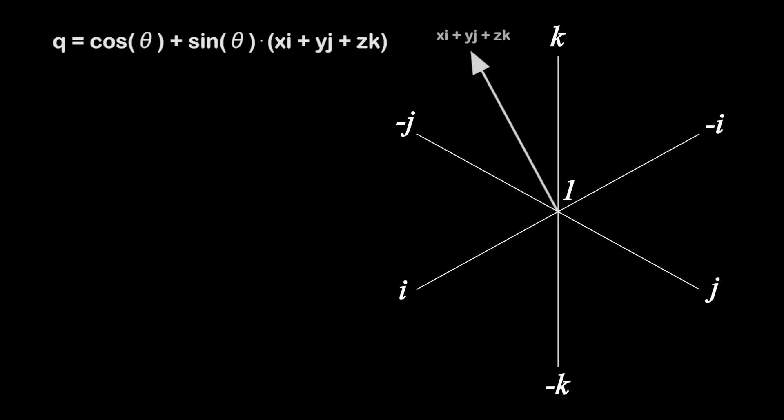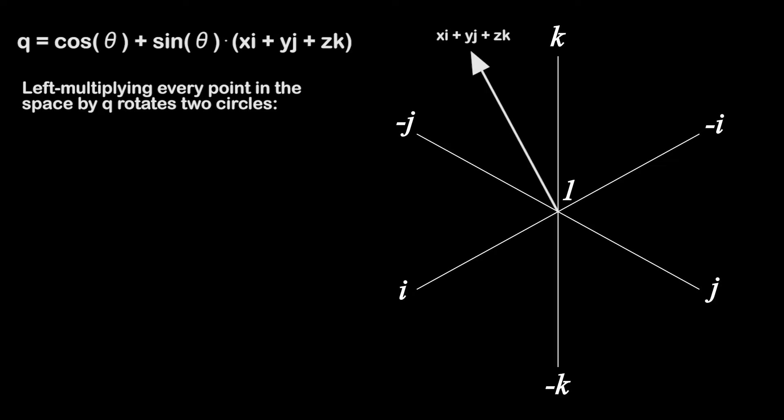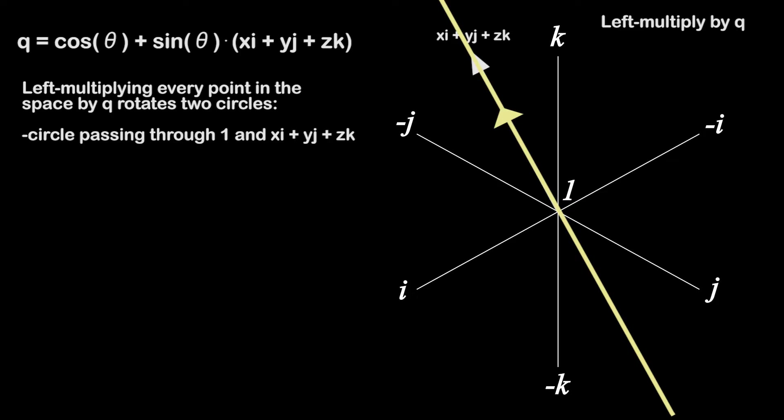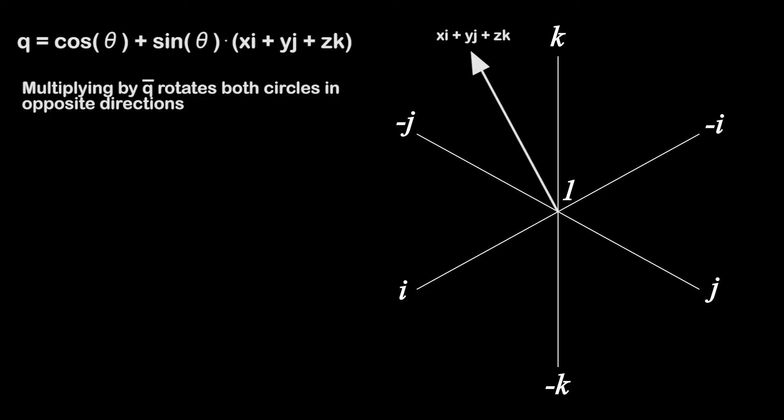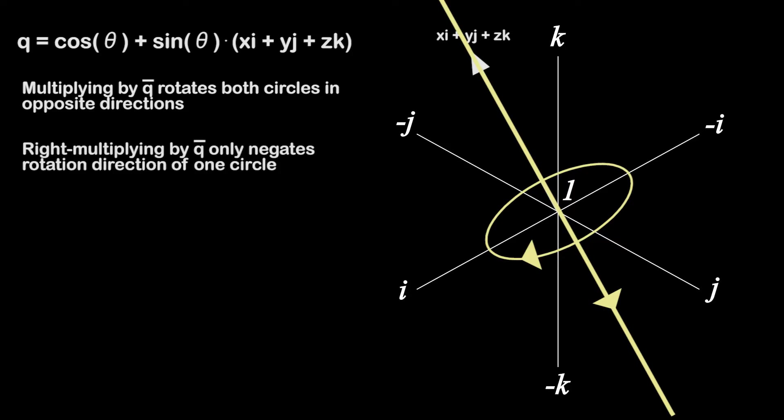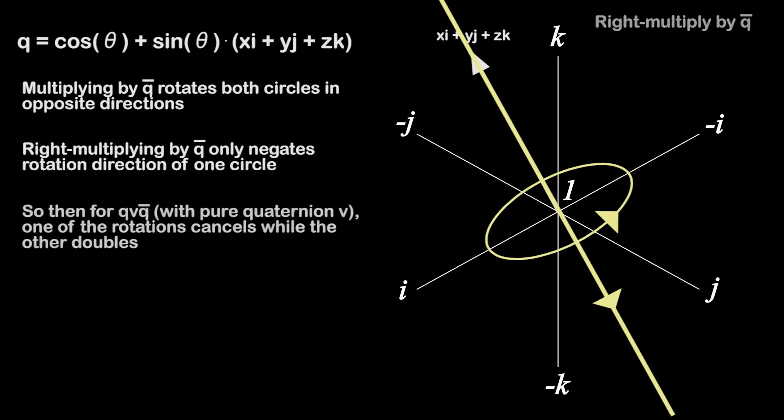Now, think back to quaternion multiplication. Multiplying by quaternion q will rotate two circles, the one passing through 1 in the vector xi plus yj plus zk, and the perpendicular circle to that. Multiplying by q conjugate will rotate both circles in the opposite direction. But like before, if we right multiply by q conjugate instead of left multiplying, we will only negate the rotation direction of the one circle passing through 1 in the vector part. So if we multiply qv q conjugate, both opposite rotations passing through 1 in the vector part will cancel out, while the other rotation will be doubled.